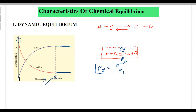Before you attain the equilibrium — from the time you start the reaction up to the equilibrium point — we find that the rate of forward reaction is more than the rate of backward reaction. But once you attain the equilibrium, both rates are the same and the net effect is zero. That's what we call dynamic equilibrium. Equilibrium is always dynamic in nature: the reactants are continuously changing into products and products into reactants, but since both rates are the same, the net effect is zero.